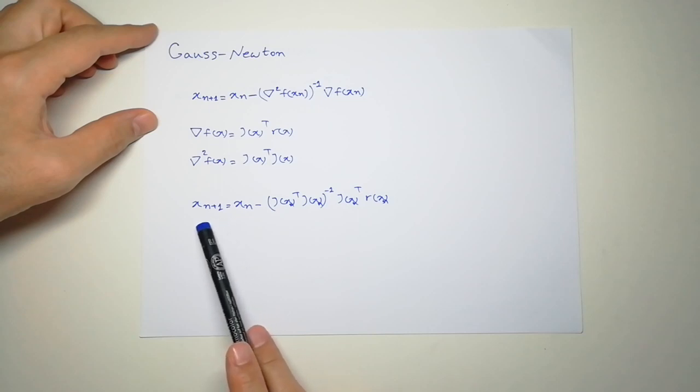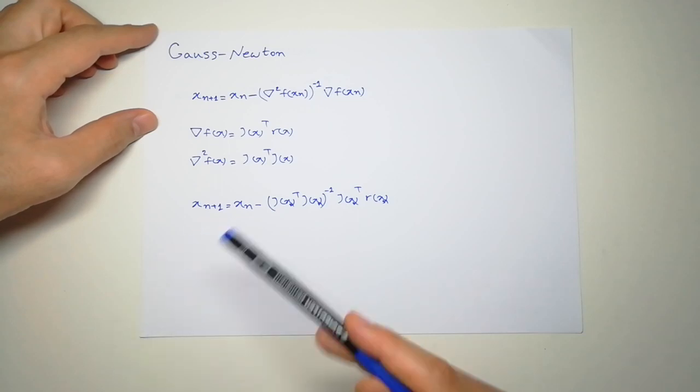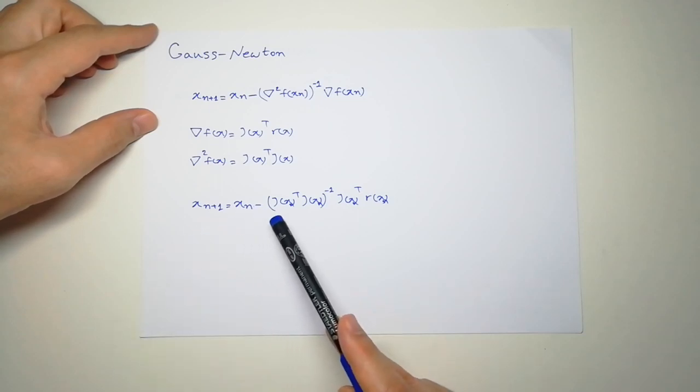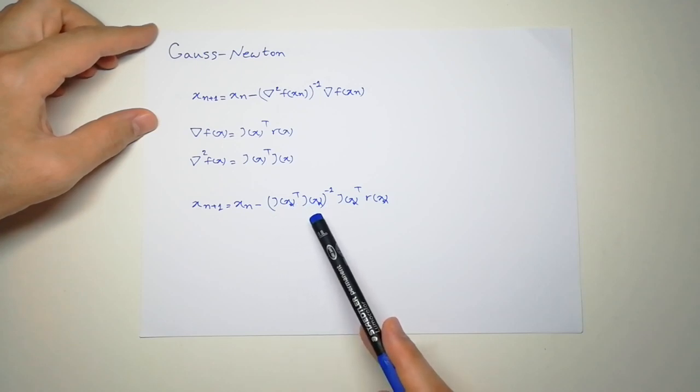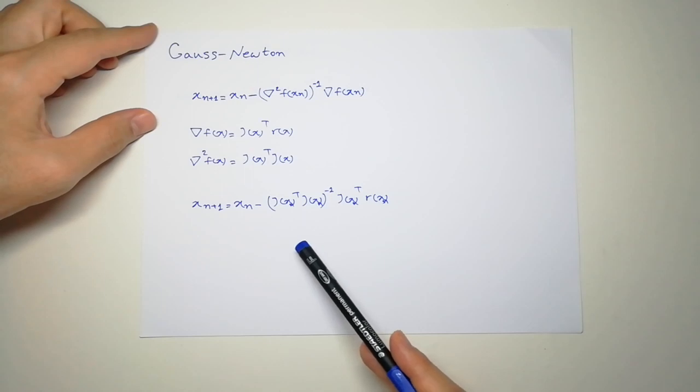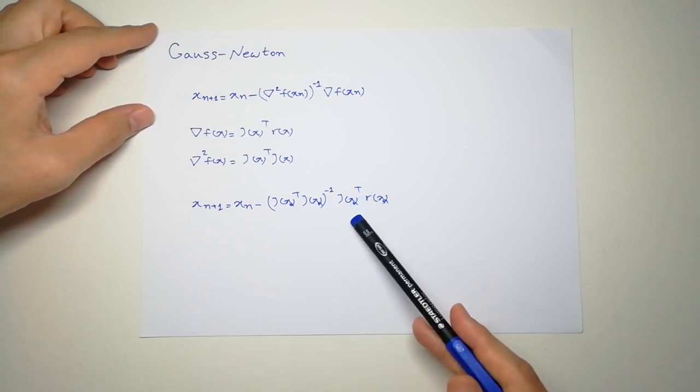If we plug these two here, you can see that the next point, we iteratively start from point x_n, we compute Jacobian transpose multiplied by Jacobian, then compute the inverse for that specific point, multiply by Jacobian transpose,